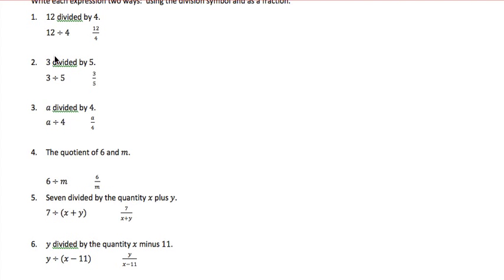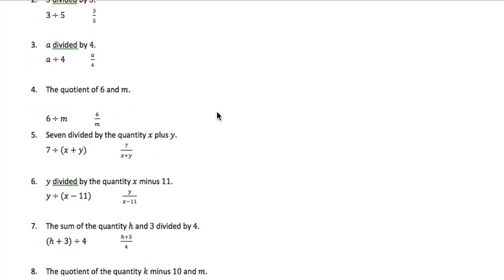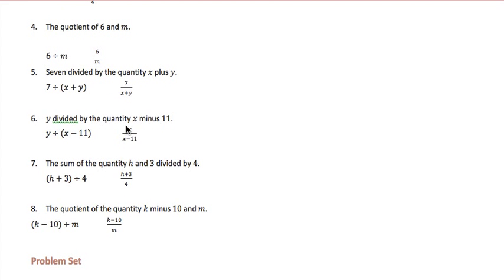And so we can see the two different ways that we write each of the expressions: 3 divided by 5, a divided by 4, the quotient of 6 and m, 7 divided by the quantity x plus y, y divided by the quantity x minus 11, the sum of the quantity h and 3 divided by 4, and the quotient of the quantity k minus 10 and m.